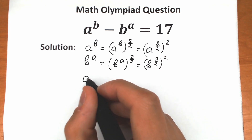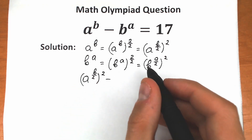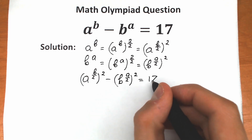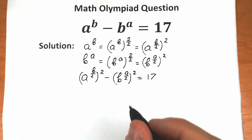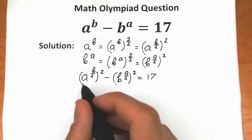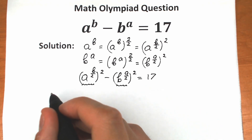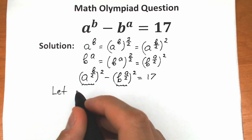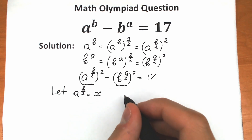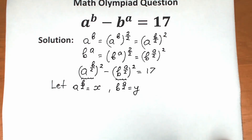Plugging these rewritten forms into our equation, we have a to the power b over 2, squared, minus b to the power a over 2, squared, equal to 17. Now it's useful to make a substitution: let a to the power b over 2 equal x, and b to the power a over 2 equal y.